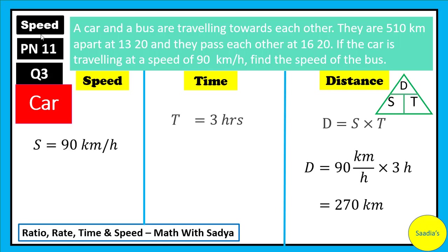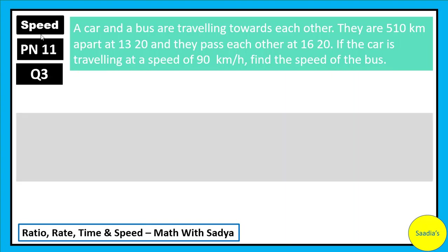Look at the question again. The car and the bus were 510 km apart. And now, out of those 510 km, the car has travelled a distance of 270 km. Can you figure out how much is the distance which has been covered by the bus? I know you sure can. Let's look at the scenario again.